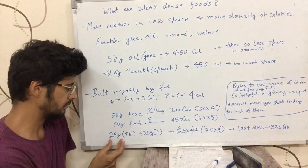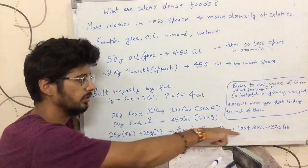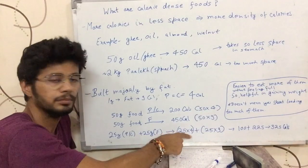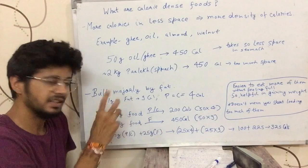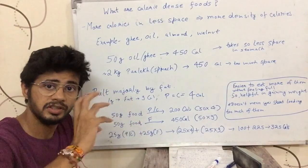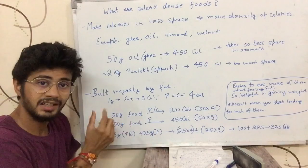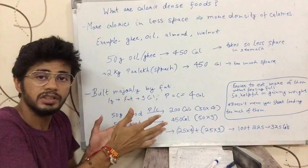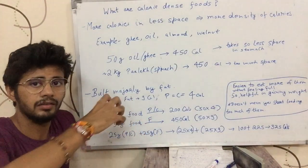In 50 grams of cheese, which is made of both protein and fat, you get around 325 calories. Because cheese contains fat, and fat has 9 calories per gram, the fat content increases the total calories significantly. So with fewer grams of a fat-rich food, the calories are higher.